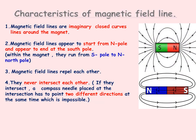Next, we will see the characteristics of magnetic field lines. Magnetic field lines are imaginary curved closed lines around the magnet. The second property is that magnetic field lines always start from the north pole and end at the south pole.